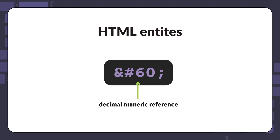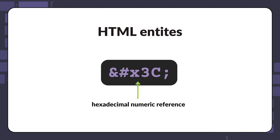The last type of character reference is the hexadecimal numeric reference. Here is an example of using the hexadecimal numeric reference for the less-than symbol. This character reference starts with an ampersand sign, hash symbol, and the letter x, followed by one or more ASCII hex digits, and ends with a semicolon.